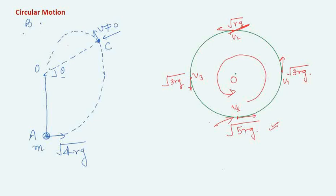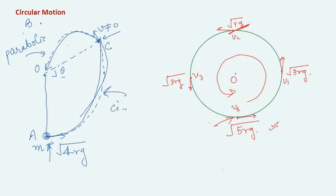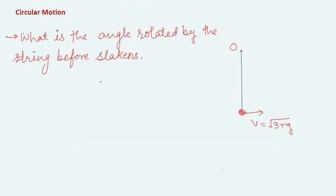There is a problem in one of the books — either HC Verma or Irodov — where the minimum velocity at point A was less than √(5rg), and at point C the particle is released such that it hits the point of the hinge. You have to find the minimum velocity at point A. The path is parabolic after the string slackens. So up to that point the motion is circular, and after that point it becomes parabolic.